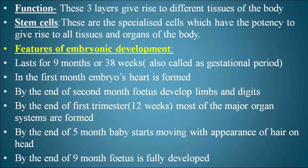Pregnancy lasts nine months or 38 weeks, also called the gestational period. In the first month the embryo's heart is formed. By the second month the fetus develops limbs and digits. By the end of the first trimester (12 weeks), most major organ systems are formed. By the end of five months, the baby starts moving with the appearance of hair on its head. By the end of nine months, the fetus is fully developed.